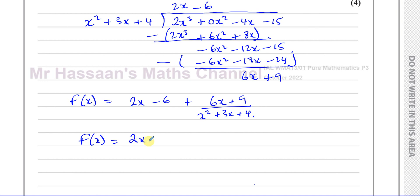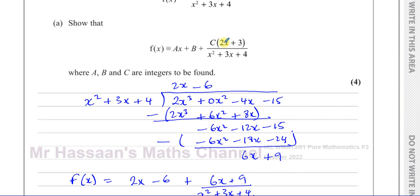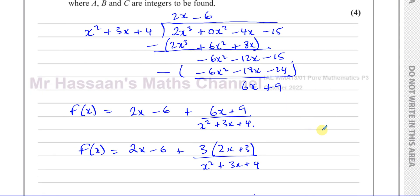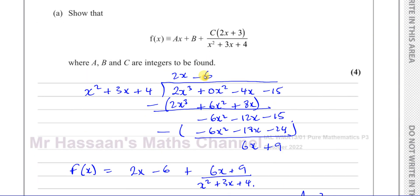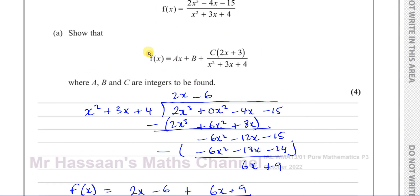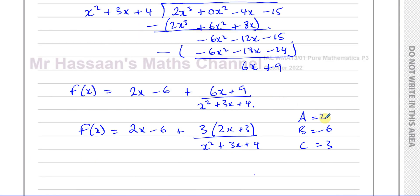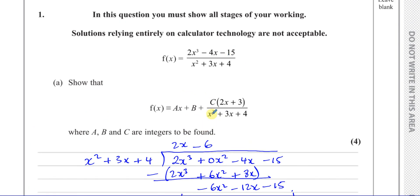So f(x) equals 2x minus 6 plus 3 times (2x plus 3) in the bracket, over x squared plus 3x plus 4. That's exactly the required form. So a is 2, b is negative 6, and c is 3. We've now written this improper fraction as a mixed number — that's the answer to part A.